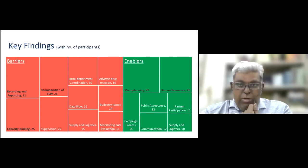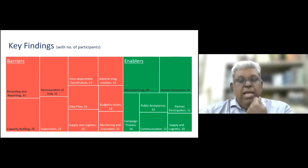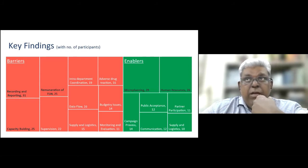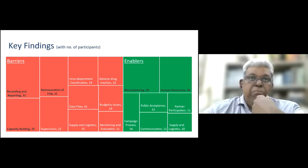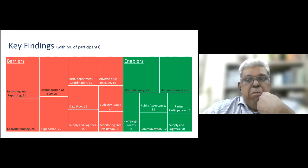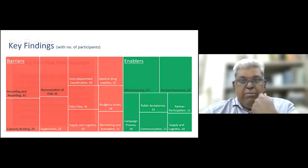The main barriers were recording and reporting, capacity building, and remuneration for FLWs. Since the two campaigns have separate ownership, their reporting formats and capacity-building modules differ. Interdepartmental coordination was a key barrier at national and state levels, as these are vertical programs with hardly any convergence. Other barriers included supervision, data flow, budgetary issues, and monitoring and evaluation. Notably, supply and logistics was seen as a barrier at national and state level but as an enabler at block and village level. The biggest enablers were micro planning and human resources, given both are already in use across campaigns, along with public acceptance, communication, and partner participation.